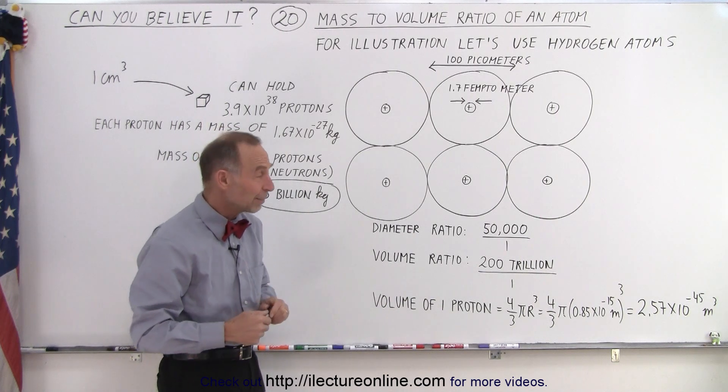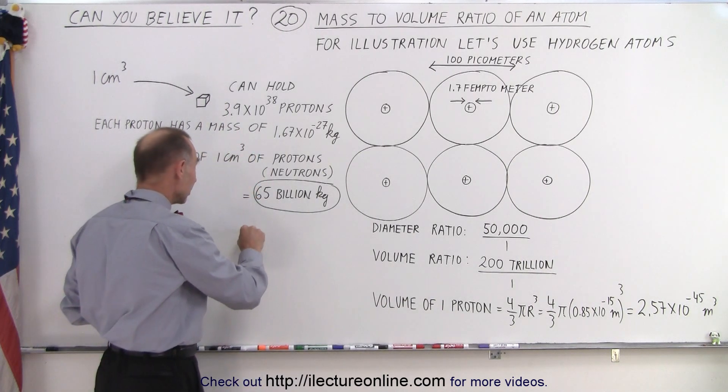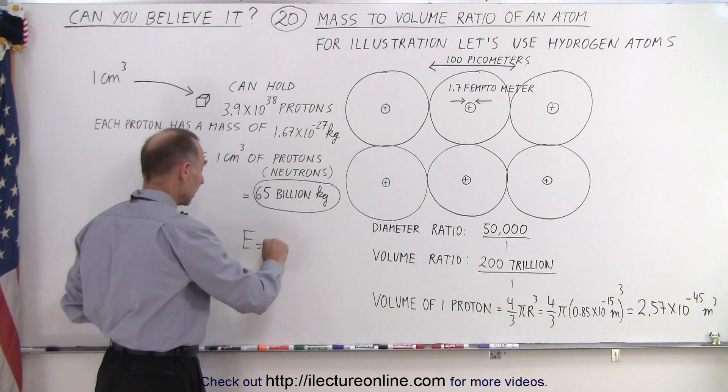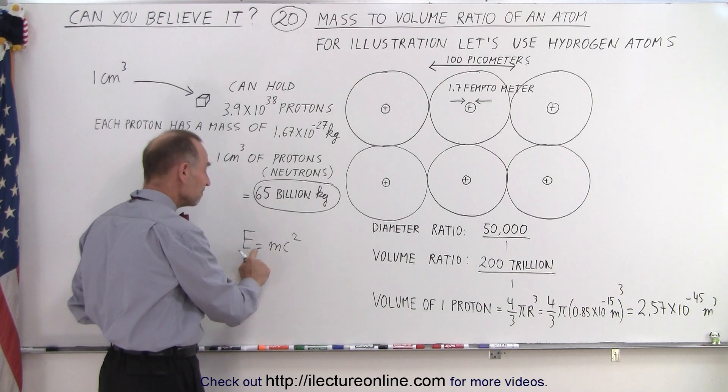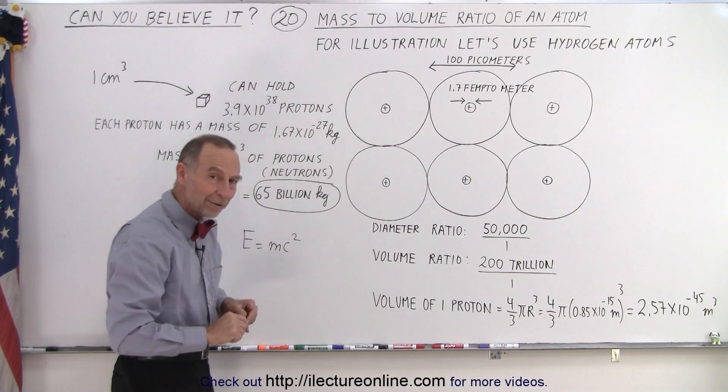Because then if you think of course that E equals MC squared, and we know that all of the mass in the universe had to come from energy, it's kind of an efficient way to make matter.